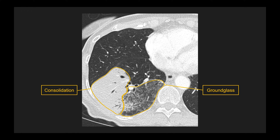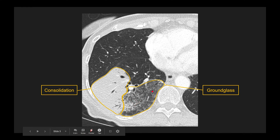Both of these terms can also be used in the setting of CT. On CT, consolidation means you lose the underlying vessels and bronchi — though you do see air bronchograms. Ground glass opacity on CT shows an overall increased density of the lung but with preservation of the underlying lung architecture.